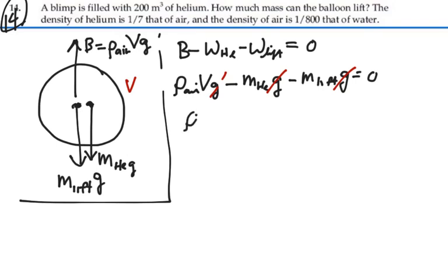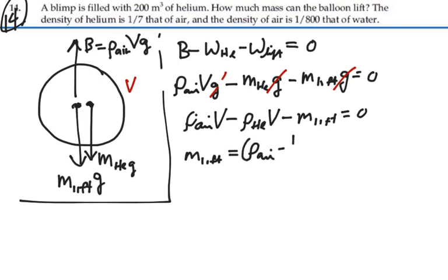And so we have the density of air times the volume minus the mass of the helium which would be the density of helium times the same volume because that's taking up the whole interior of the balloon minus the mass of the lift is equal to zero. In other words, the mass of the lift that we can lift with this balloon is equal to the density of air minus the density of helium which is one-seventh the density of air times the volume.